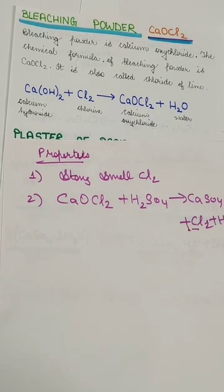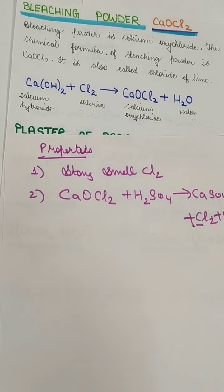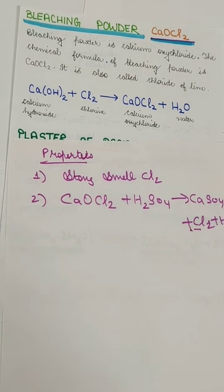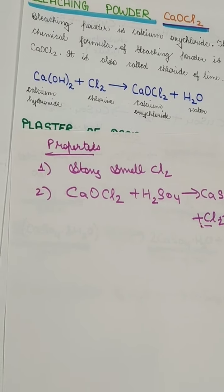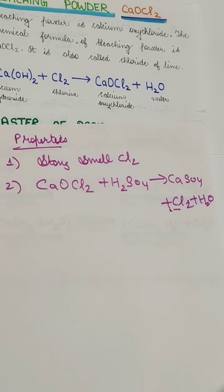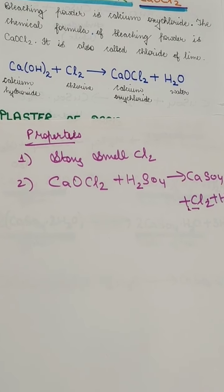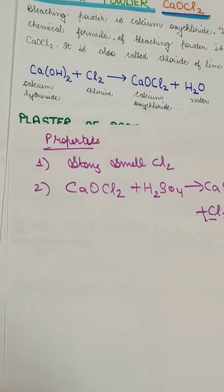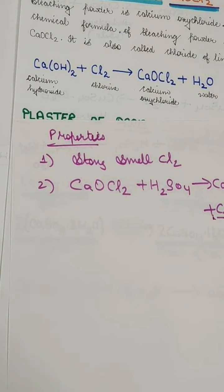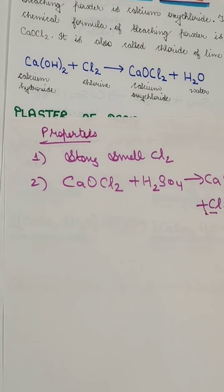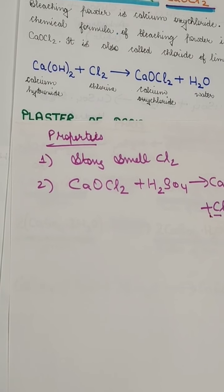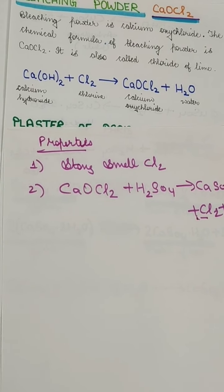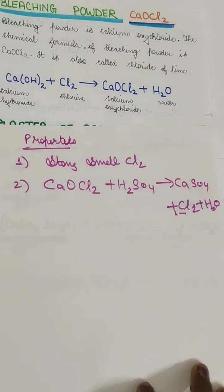Chlorine has an oxidizing property, and this oxidizing property makes colors almost colorless. It is used in the bleaching industry for decolorizing cotton and linens, and in paper industries to bleach wood pulp — the wood pulp is brown in color and the paper is very bright white, so it helps in decolorization. It is also used in washing industries like laundries.